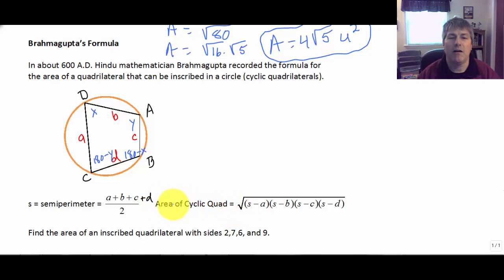So side A plus side B plus side C plus side D all divided by 2 is our semi-perimeter. And our formula for the area of a cyclic quadrilateral is the square root of the semi-perimeter minus side A times the semi-perimeter minus side B times the semi-perimeter minus side C times the semi-perimeter minus side D. So a little bit different. There's no extra semi-perimeter in there. It's just the semi-perimeter minus each of the four sides and then the square root of all of that.